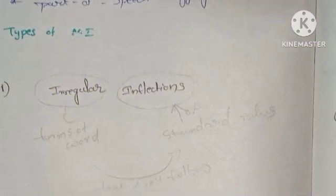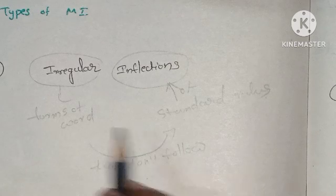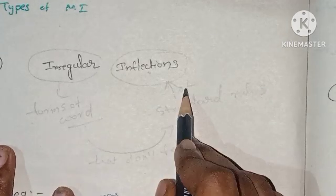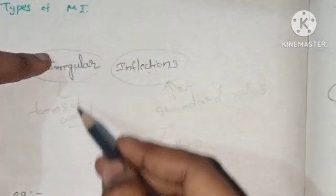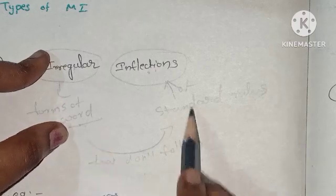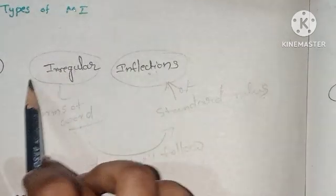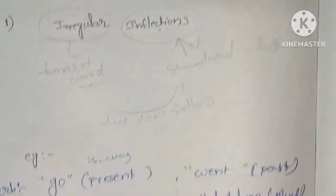The first type is inflection irregularities - forms of words that don't follow the standard rules of inflections. These are words that may be formed but don't follow the standard inflection rules.